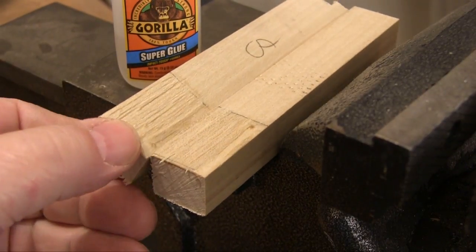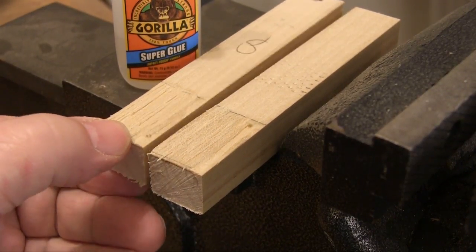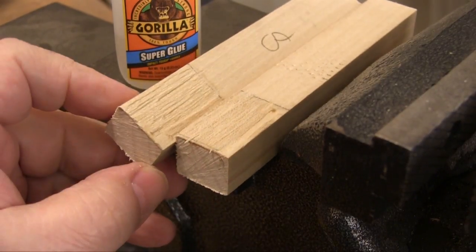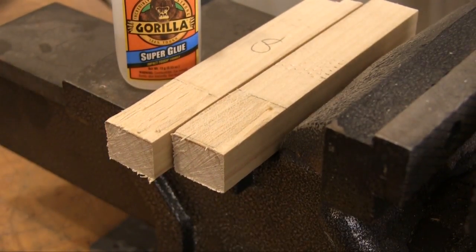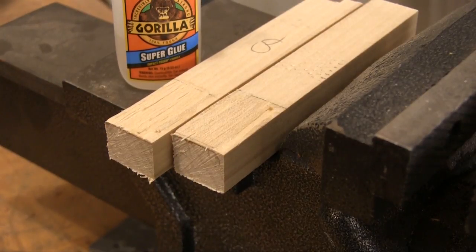The super glue obviously got deeper into the poplar and then didn't let go when we failed the joint. While all of the breaks looked good, the one with the super glue here surprised me more than the others.